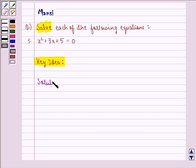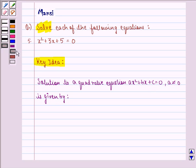We see that the solution to a quadratic equation ax² + bx + c = 0, where a ≠ 0, is given by x = (-b ± √(b² - 4ac))/(2a). This is equal to (-b ± √(4ac - b²)i)/(2a).